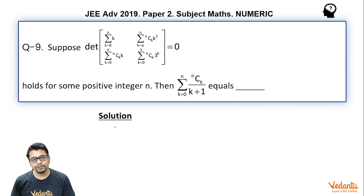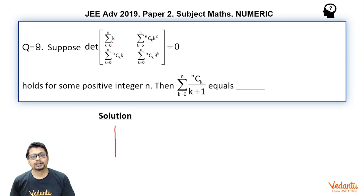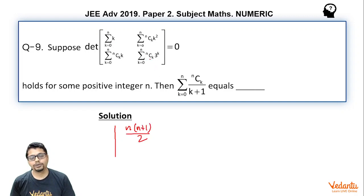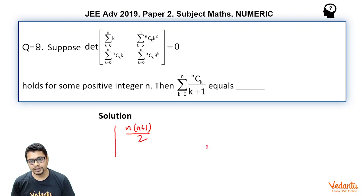If you see carefully, the first element is essentially the sum of the first n natural numbers, which will be n(n+1)/2. The second row, second column element — sigma k equal to 0 to n of nCk times 3^k — this essentially is 4^n.